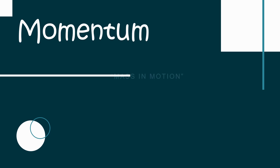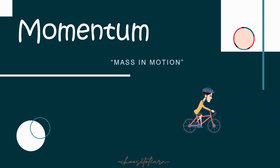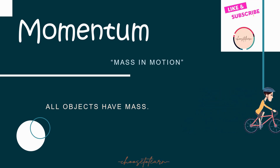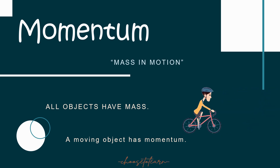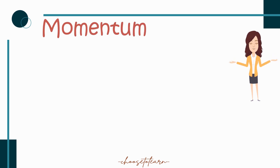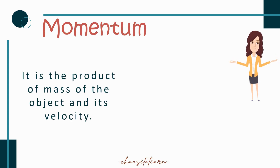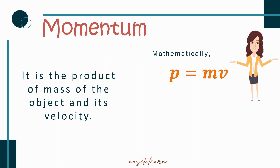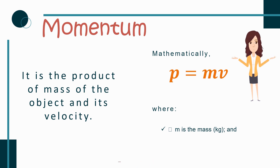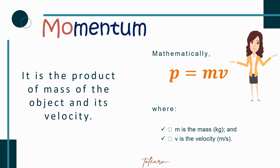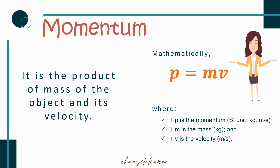We can say that momentum is mass in motion. All objects have mass, and a moving object has momentum since its mass is in motion. Momentum is the product of mass and velocity. Mathematically, P equals M multiplied by V, where M is the mass in kilograms, V is the velocity in meters per second, and P is the momentum with SI unit of kilograms times meters per second.